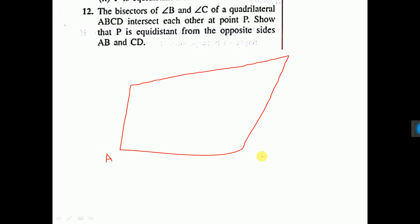A, B, then C, then D. Any type of quadrilateral you can draw. Are you listening students? Yes, sir. Good. Very good.